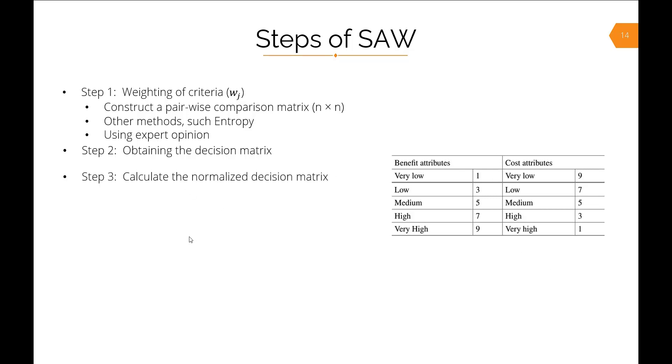In step three, we calculate the normalized decision matrix. Since we have different attributes—cost attributes and benefit attributes—we use different formulas for the normalized decision matrix. For any positive criterion, we use xij equals rij divided by rj max.